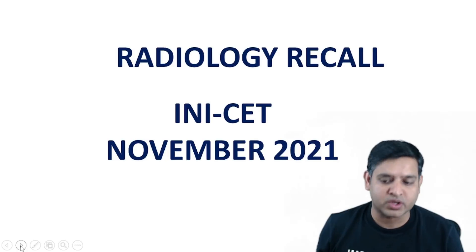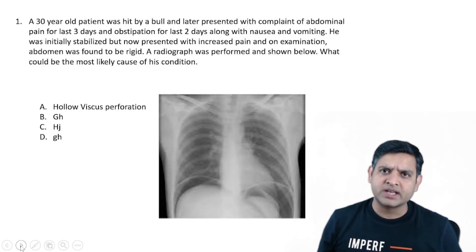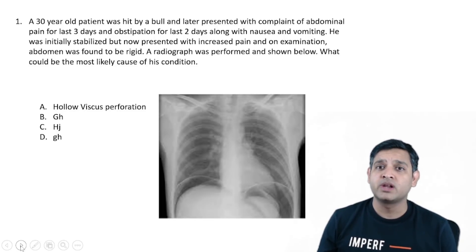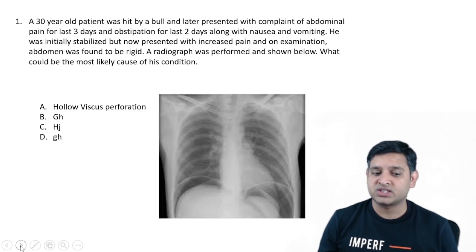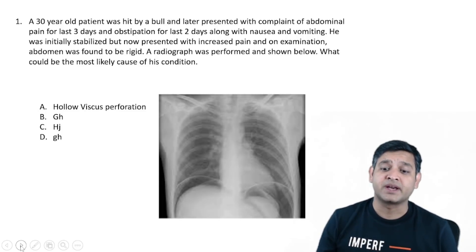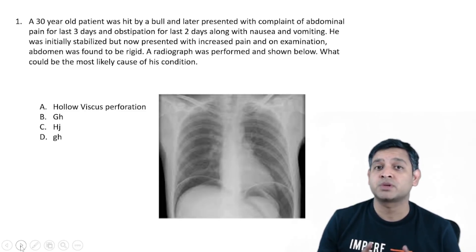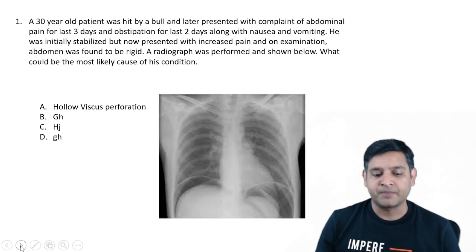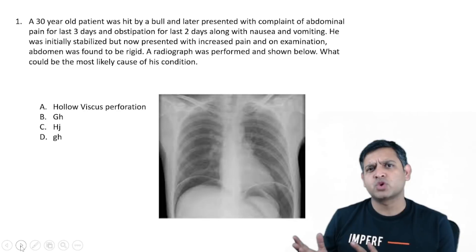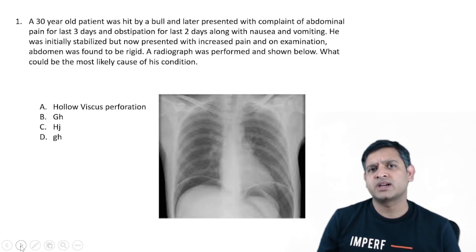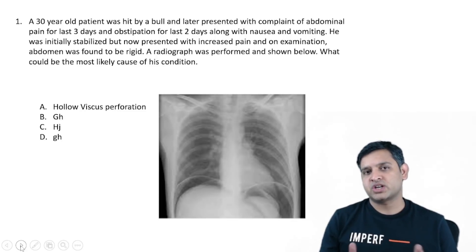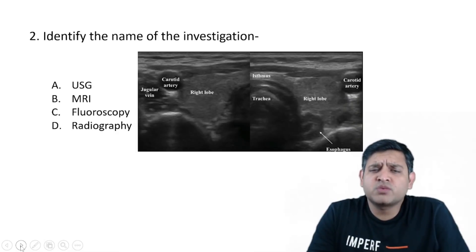The first question was pretty straightforward — a 30-year-old middle-aged patient hit by a bull, presenting with abdominal pain, obstipation, nausea, and vomiting. He was initially stabilized but then presented with increased pain. On examination the abdomen was rigid, and the chest X-ray showed air under the diaphragm. The answer is hollow viscous perforation. There was one more choice — subdiaphragmatic abscess — but history and everything points to hollow viscous perforation, a case of perforation peritonitis.